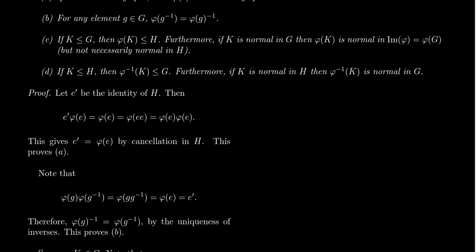Let's prove property A: that identities are preserved. Suppose that E prime is the identity of H, and we think that phi of E is the identity of H — that's what we're trying to prove. We have to show that E prime is equal to phi of E.